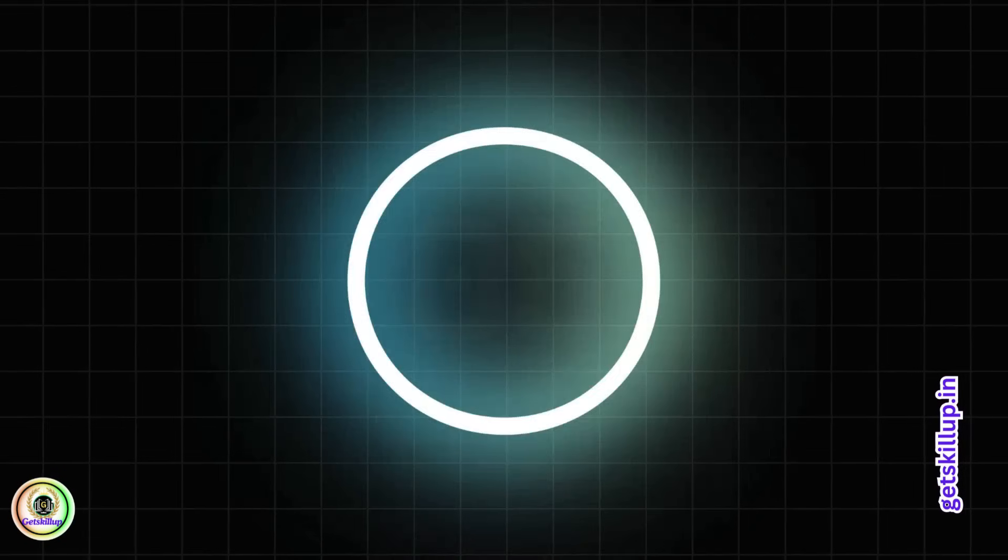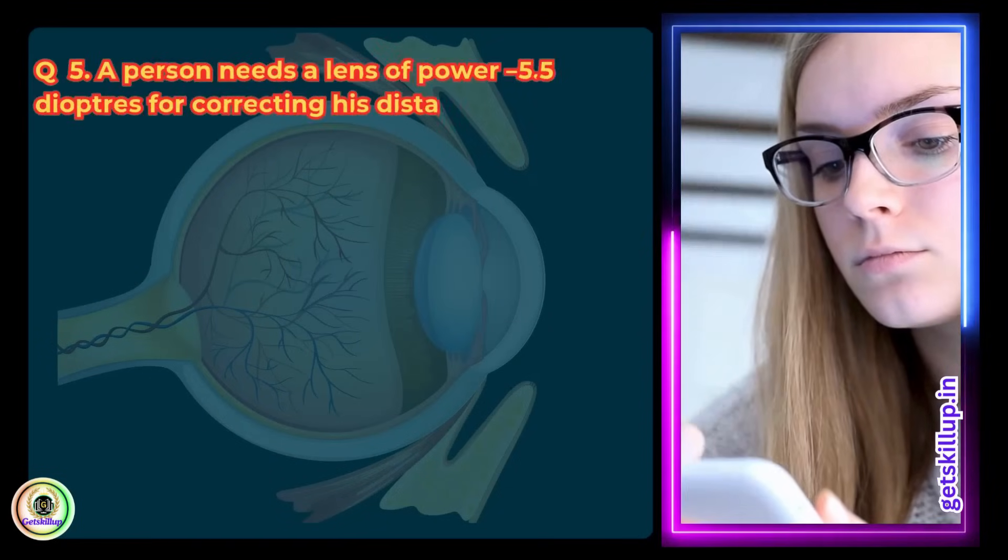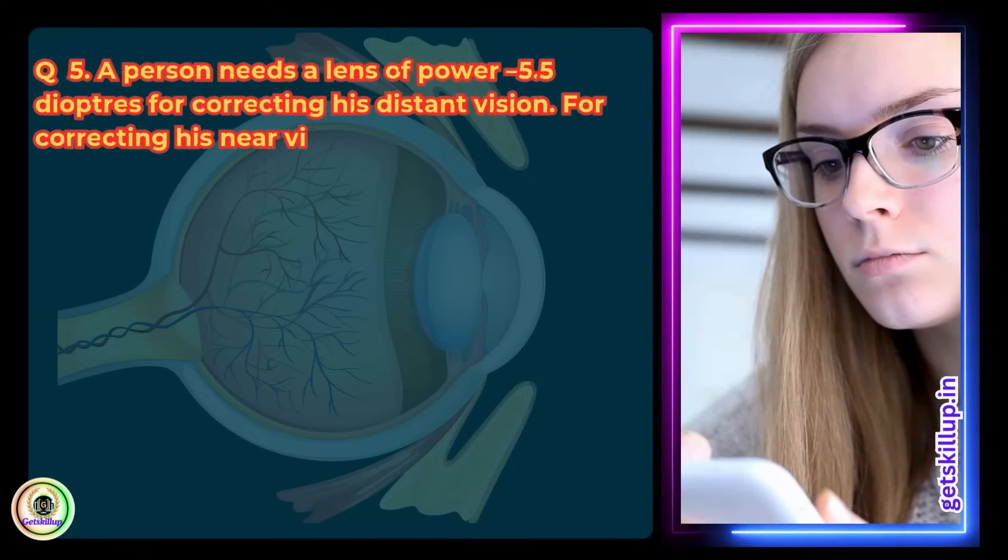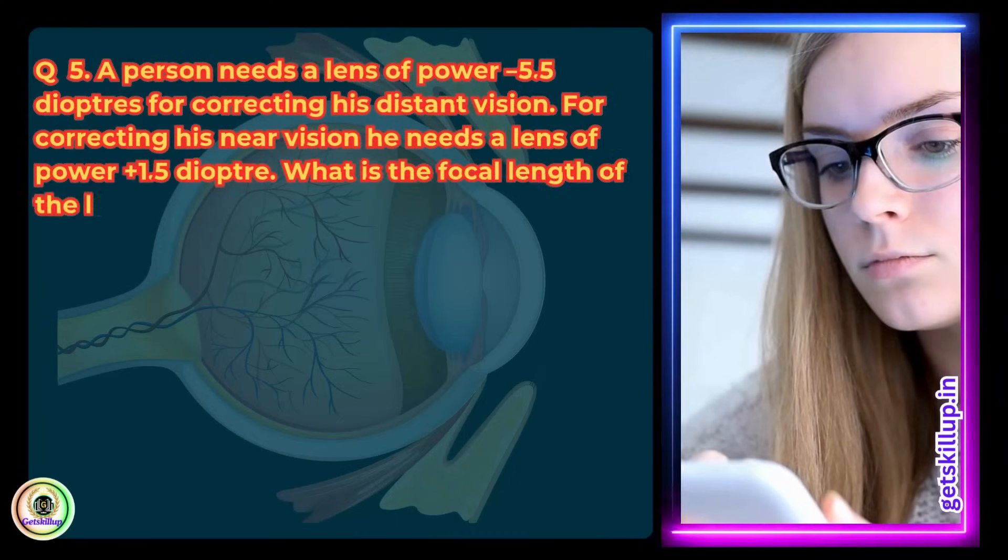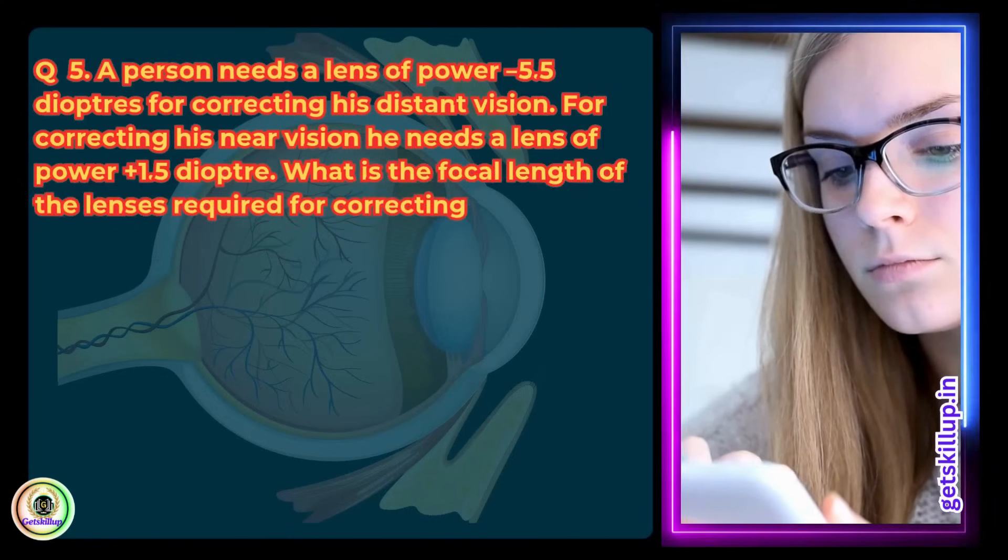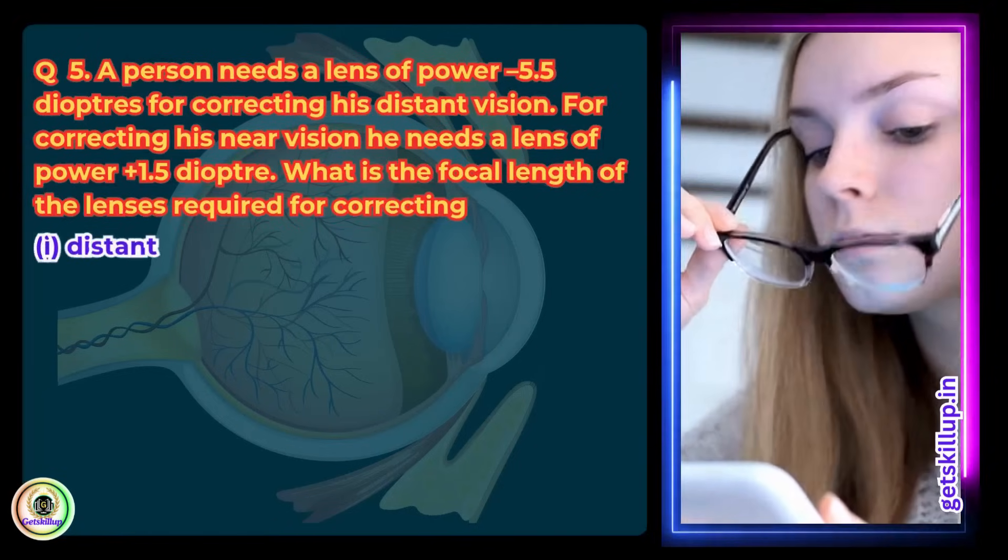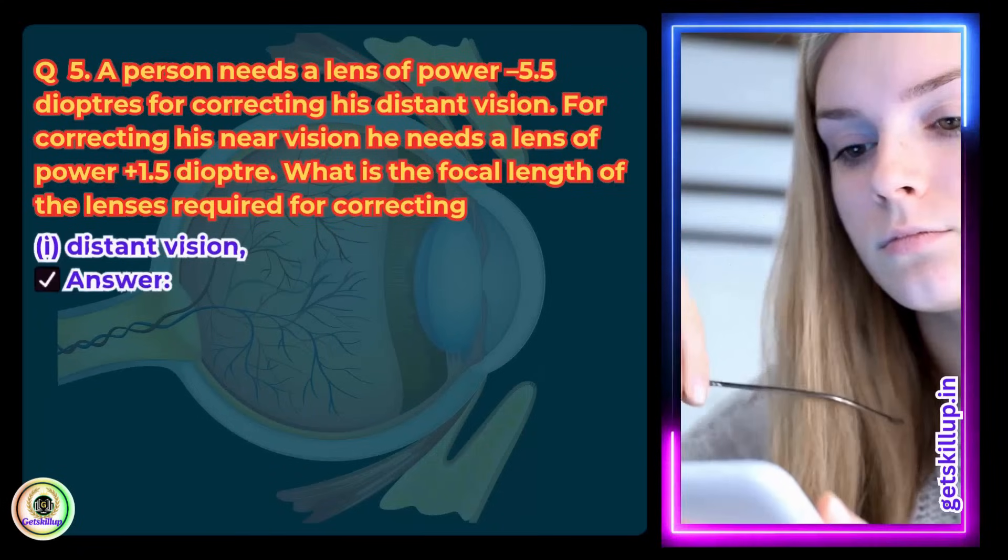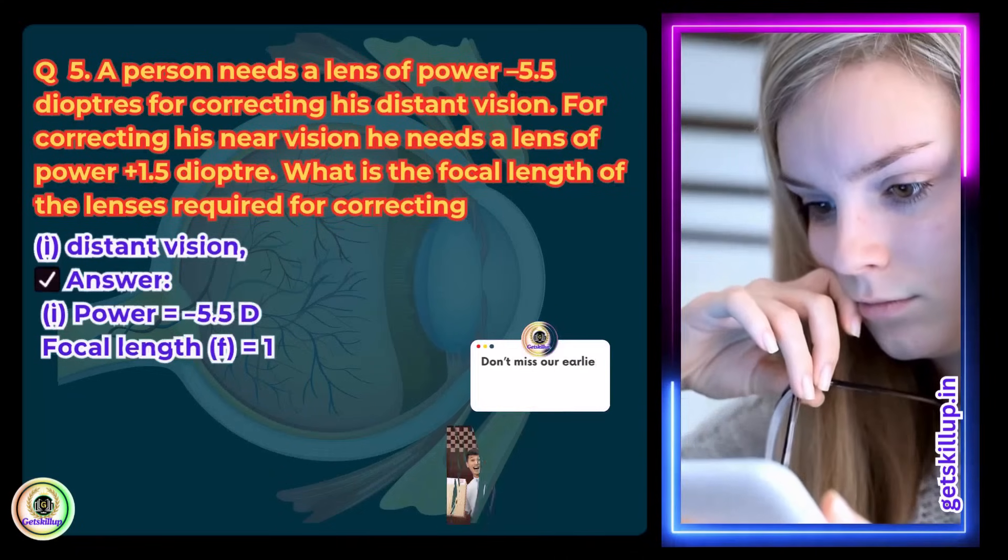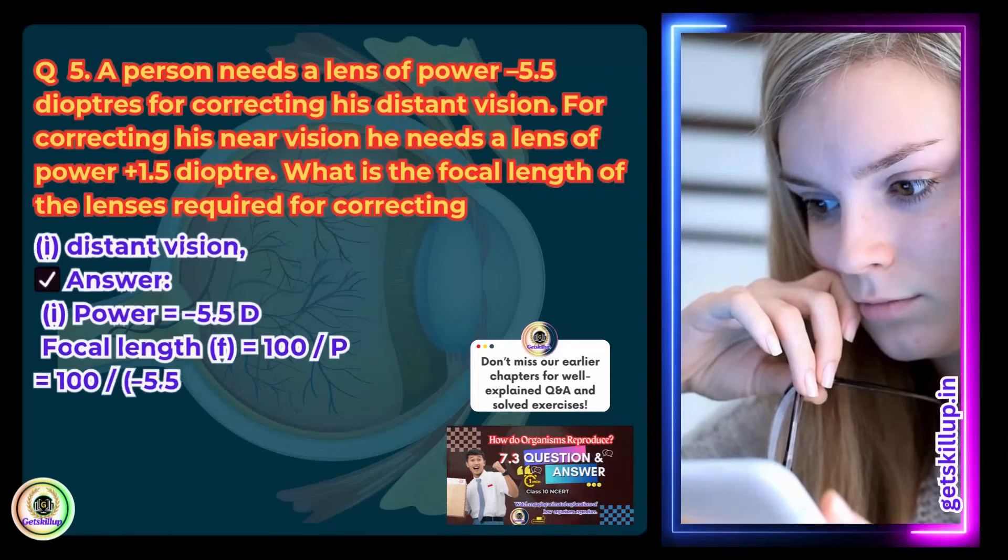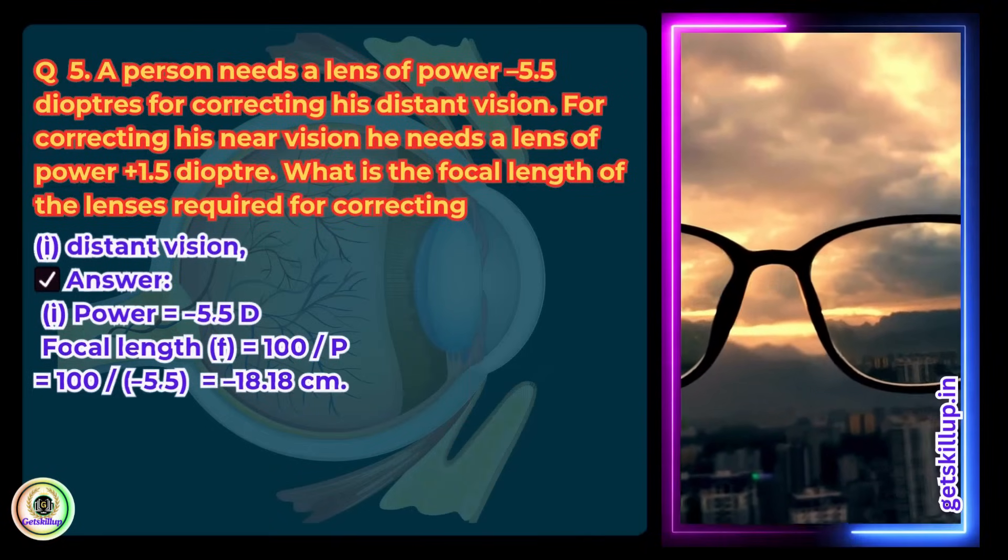Question 5. A person needs a lens of power minus 5.5 diopters for correcting his distant vision. For correcting his near vision, he needs a lens of power plus 1.5 diopters. What is the focal length of the lens required for correcting distant vision and near vision? Answer: For distant vision, power equals minus 5.5 diopters. Focal length F equals 100 by P, which is equal to 100 divided by minus 5.5, equals minus 18.18 cm.